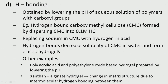Other examples include polyacrylic acid and polyethylene oxide based hydrogels prepared by lowering the pH, and xanthan-alginate hydrogels where a change in matrix structure results from intermolecular hydrogen bonding between them. All these are examples where hydrogen bonding plays a very important role in creating the hydrogel system.